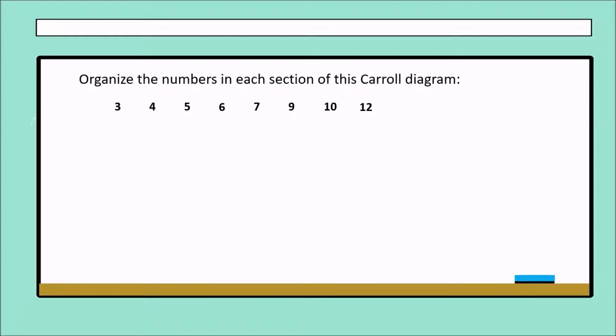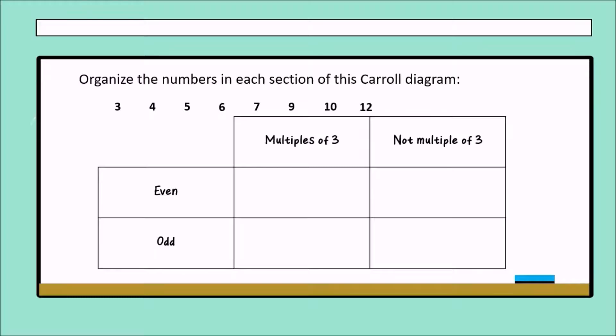We have different numbers: three, four, five, six, seven, nine, ten, and twelve. So, here appears our Carroll diagram.